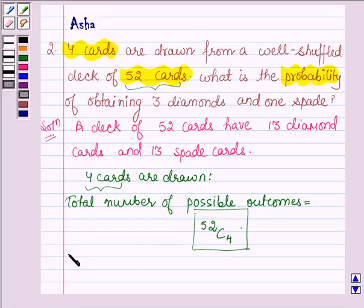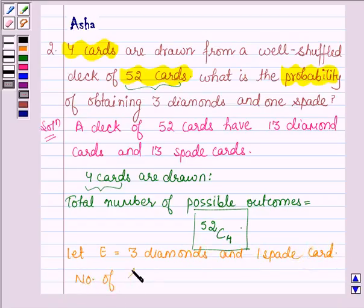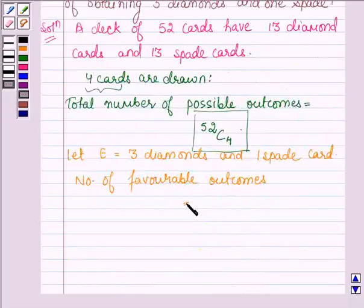Now, let us denote the event E by 3 diamonds and 1 spade card. The number of favorable outcomes is equal to 13C3.